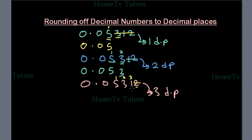So it won't have effect on the last significant number. So now we have 0.0531 to 3 decimal places.